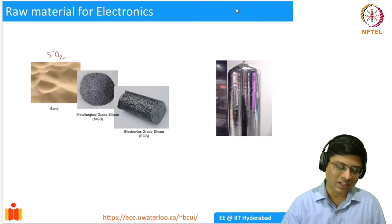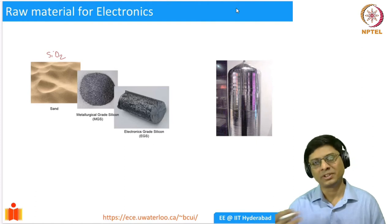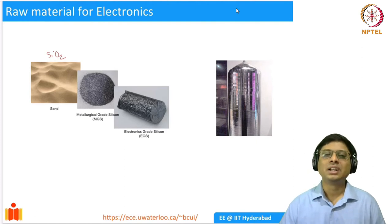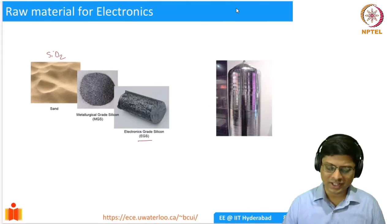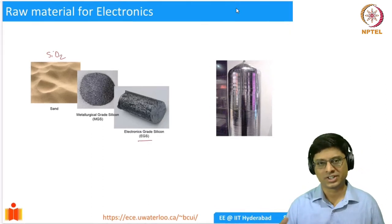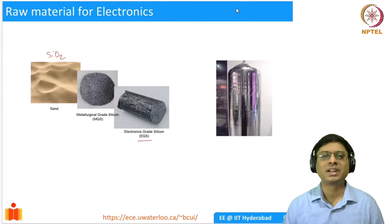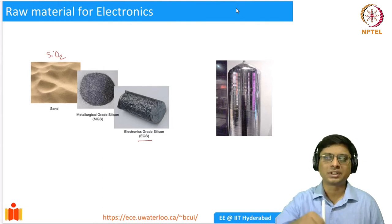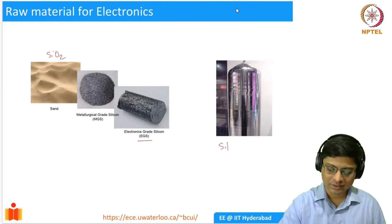Essentially what we do is start with sand, purify it, and get what is known as metallurgical grade silicon, then purify further to get electronic grade silicon. This electronic grade silicon (EGS) is taken, heated up in a chamber, melted, and then a small seed crystal is introduced. Through multiple processes, you melt it and draw it so that a perfect single crystal of silicon forms — this is called a silicon ingot.